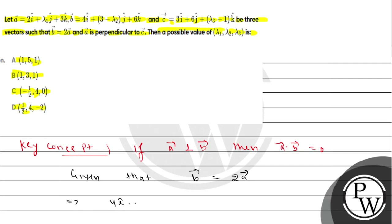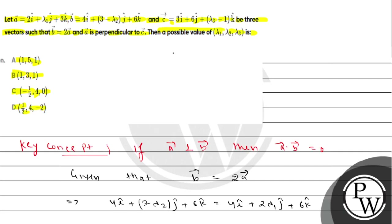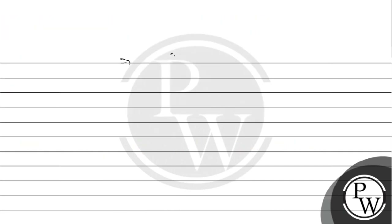Given that vector b equals 4i-cap plus (3 minus lambda-2) j-cap plus 6k-cap, and since b equals 2a, we multiply vector a by 2 to get 4i-cap plus 2*lambda-1 j-cap plus 6k-cap. Comparing components, we get that (3 minus lambda-2) is equal to lambda-1.